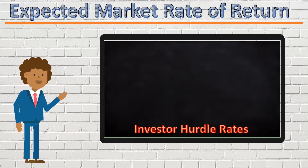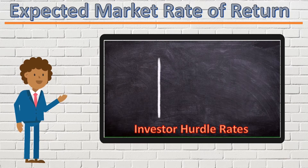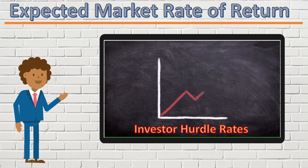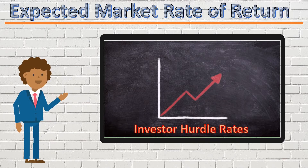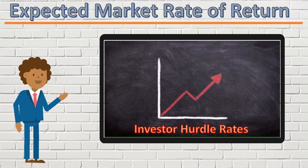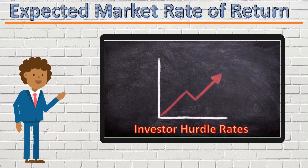The expected market rate of return can differ from one investor to another and can cause material differences in the calculation of cost of capital for the same company, depending on which method is used. It is therefore important that one always states any assumptions made in their calculations when communicating their analyses to colleagues or other stakeholders in the company. A company can evaluate the required return on investment on its shares by using the CAPM formula. This required return on investment is the company's cost of equity, or cost of raising capital by selling shares to the public.